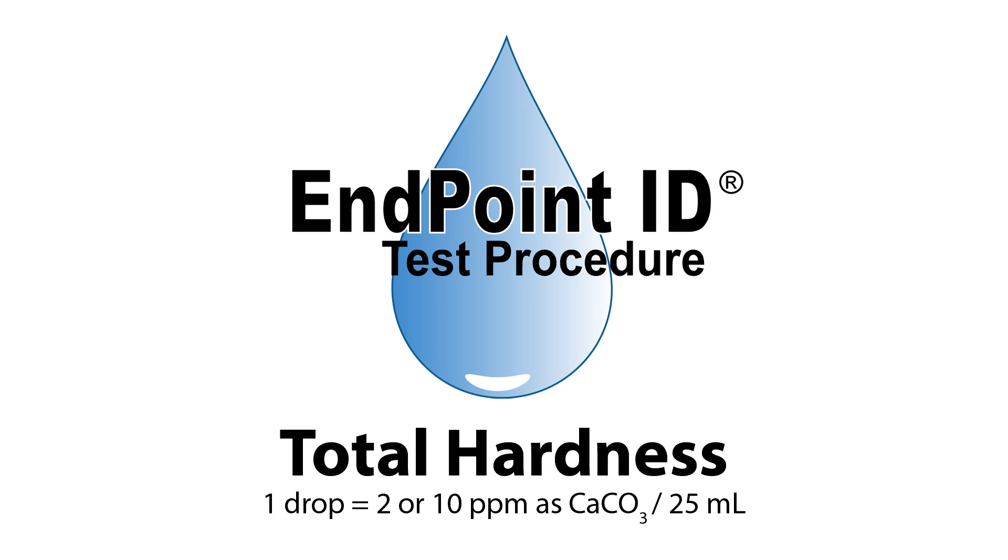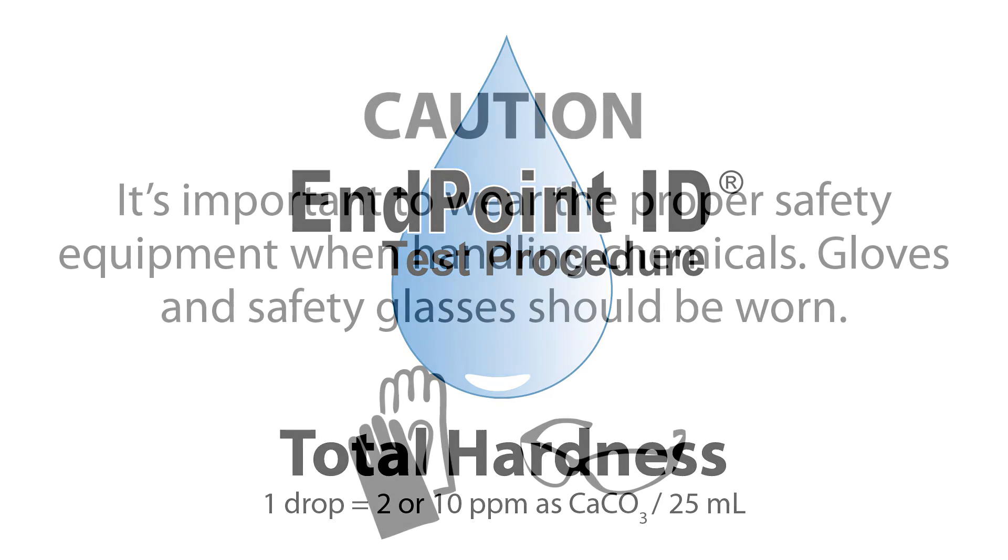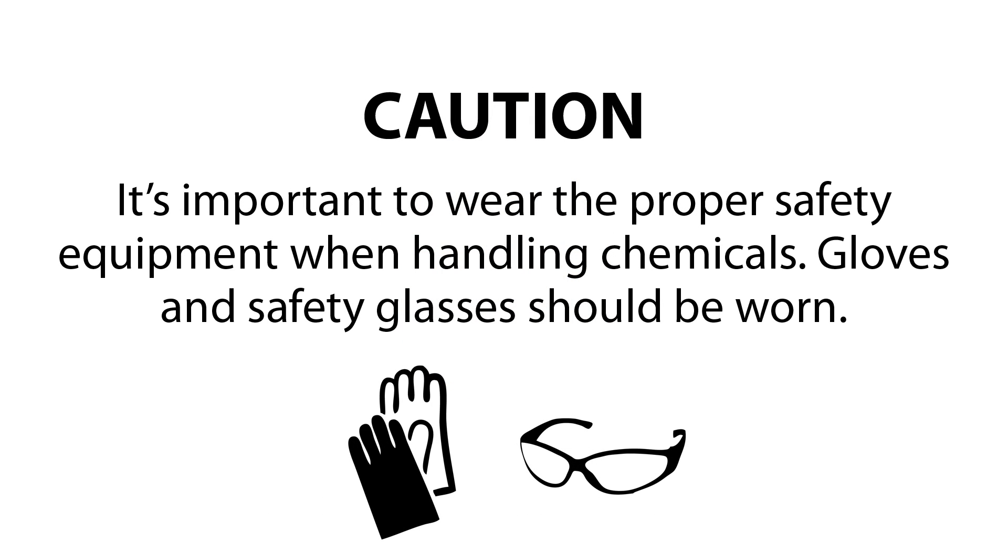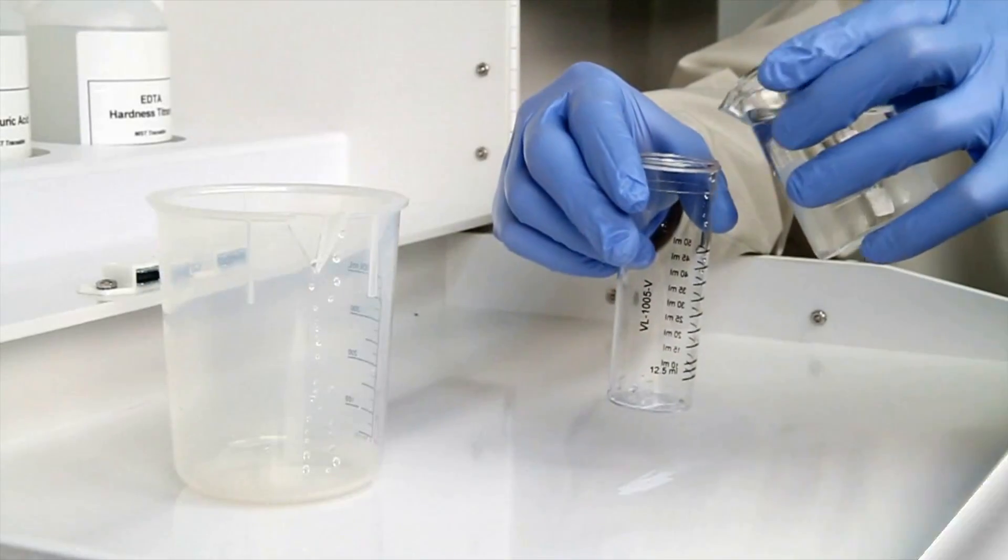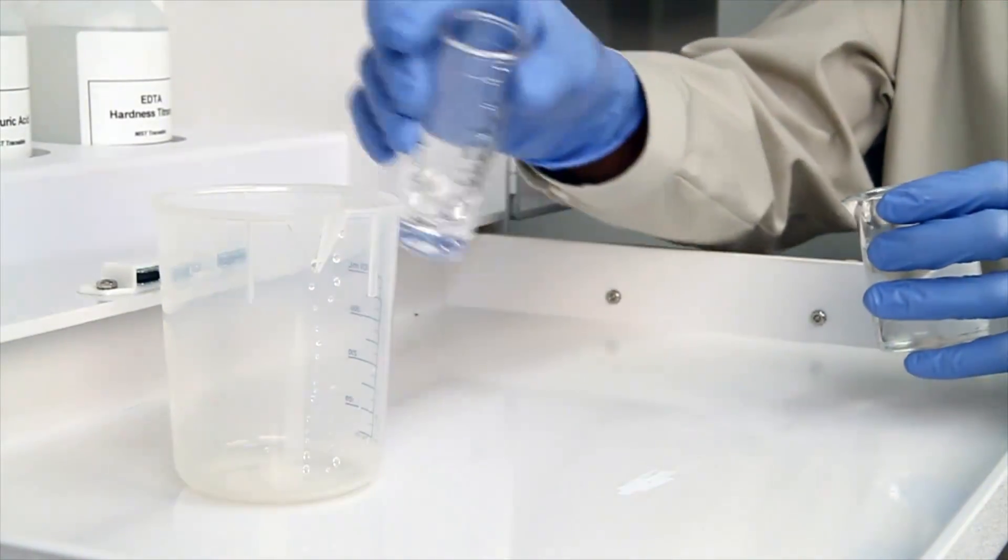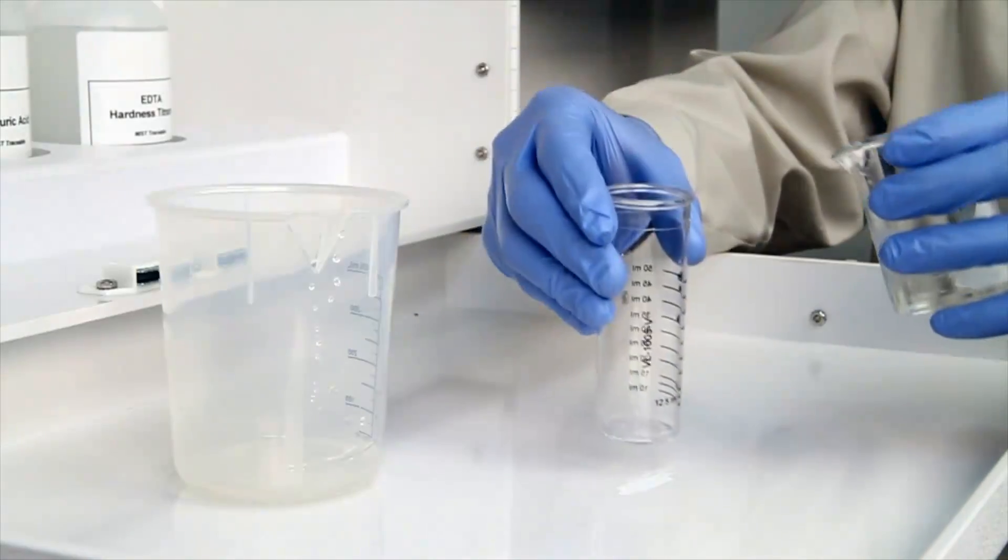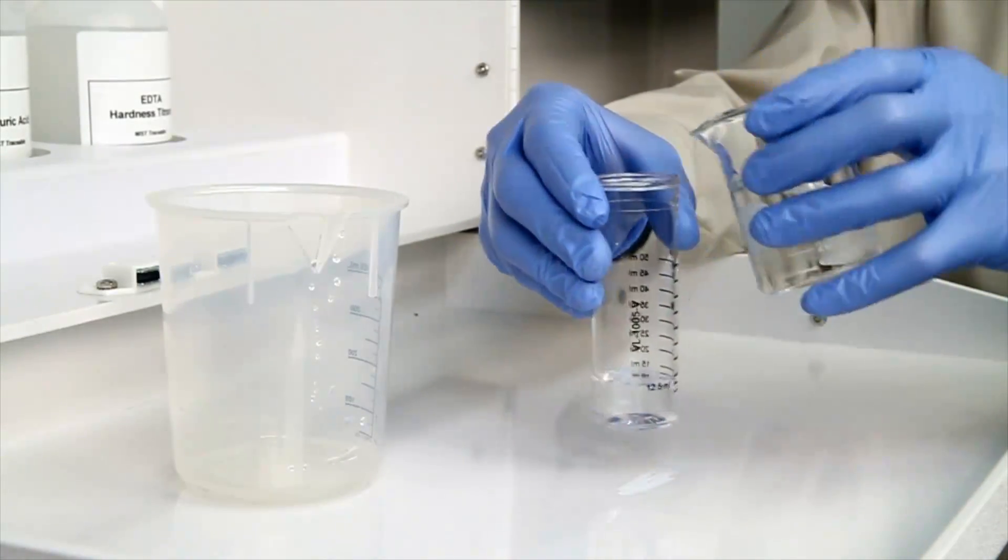This is a demonstration of a total hardness drop count test kit using Endpoint ID procedures. The first step according to the Endpoint ID procedure is to gather an accurate sample. The smallest change in sample size will lead to inaccurate results.